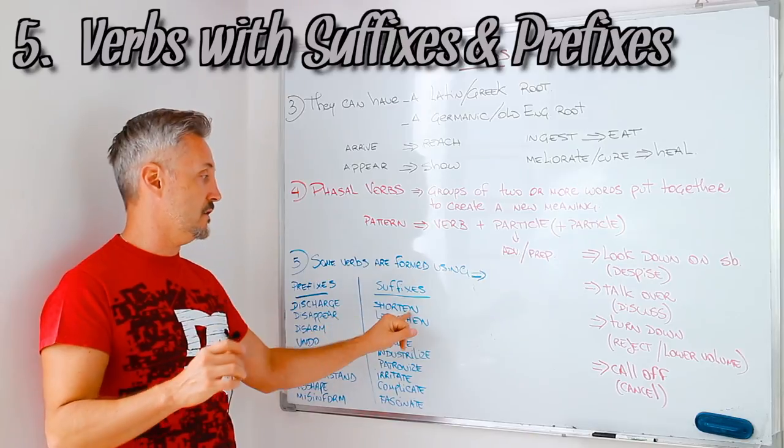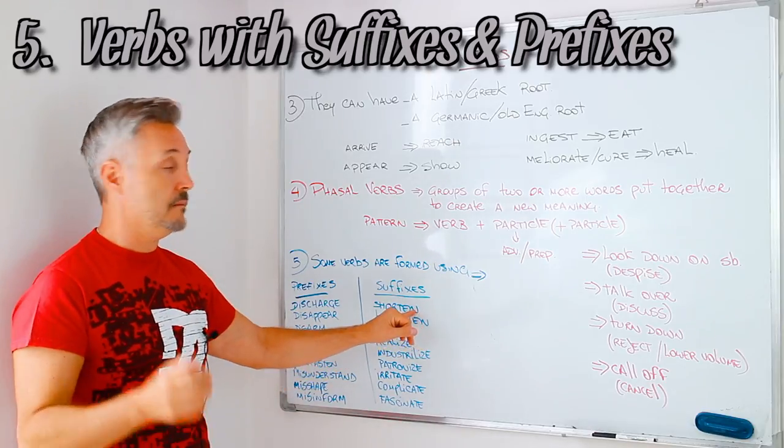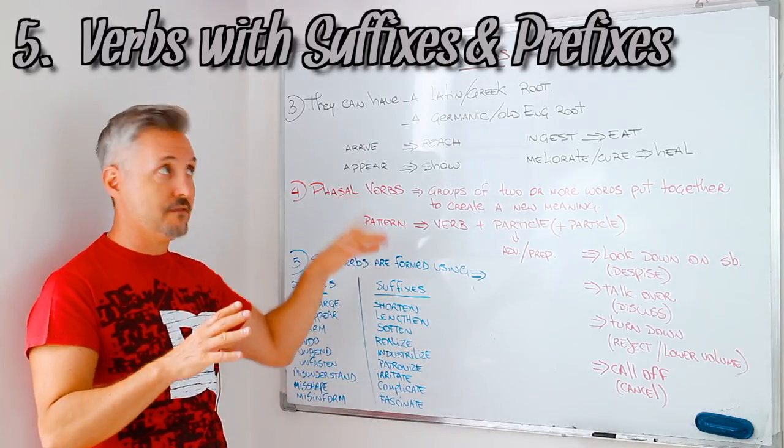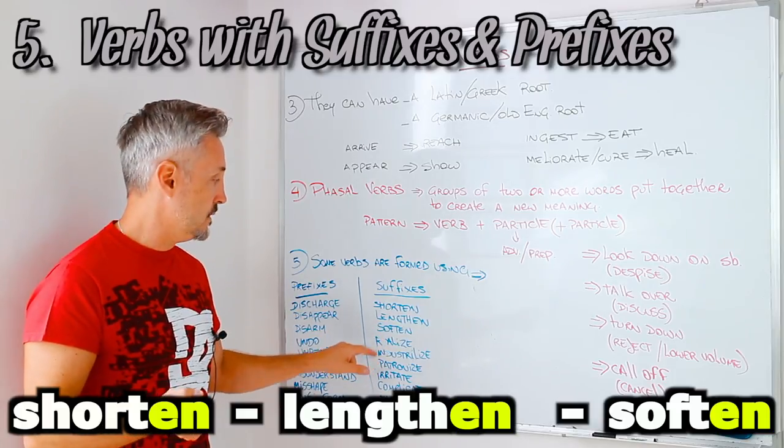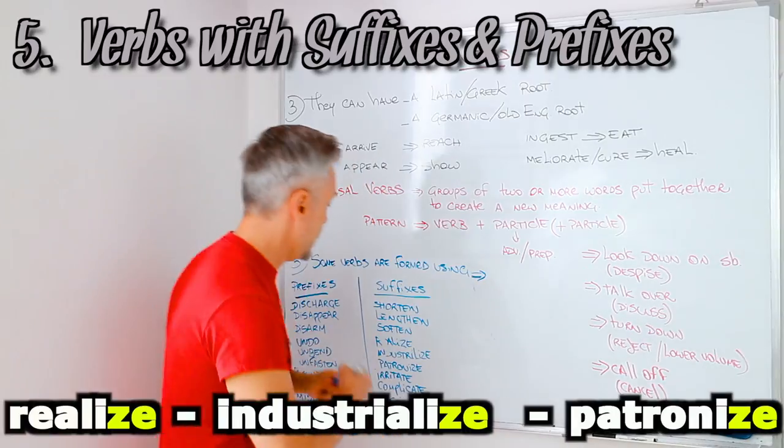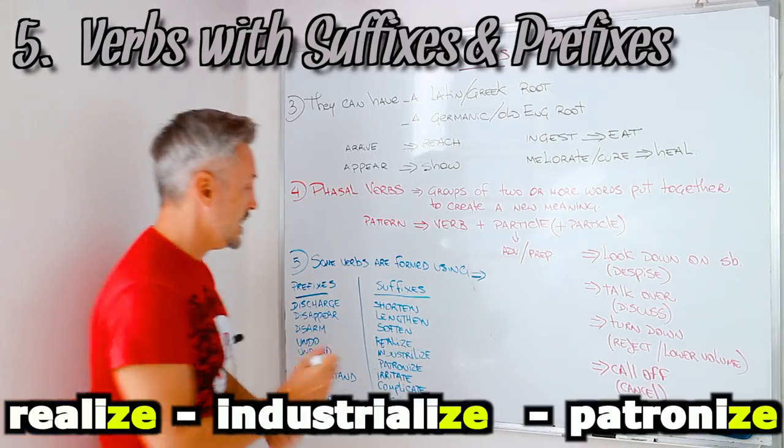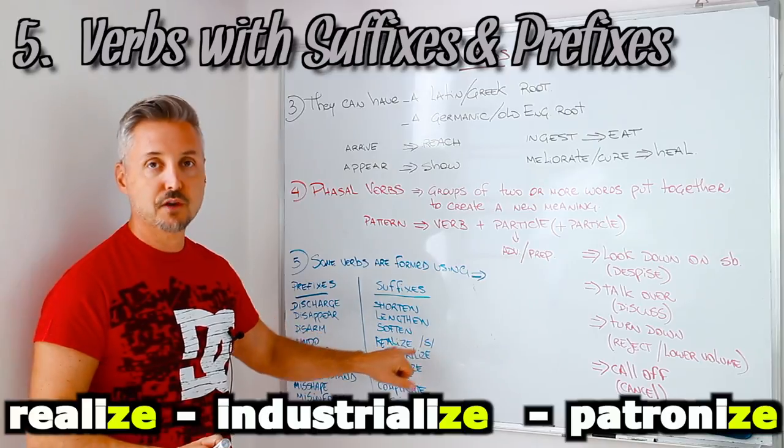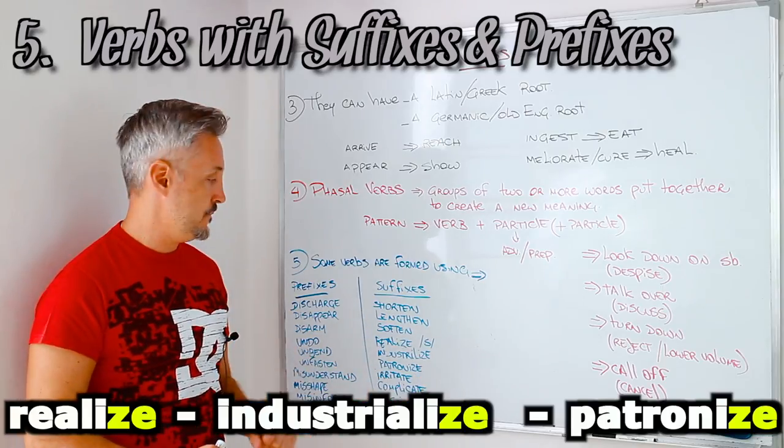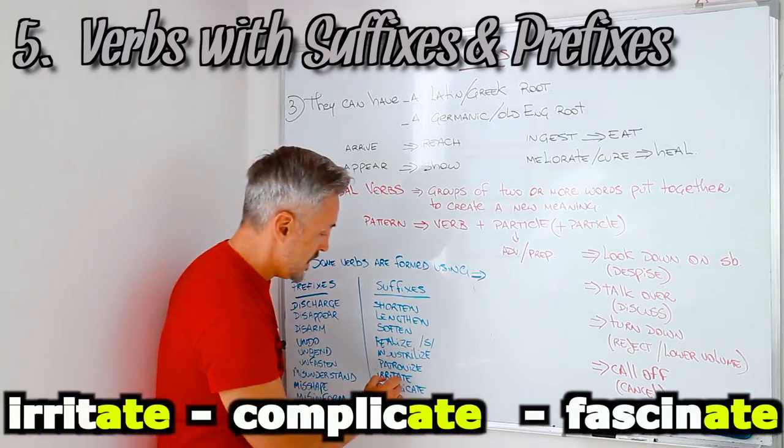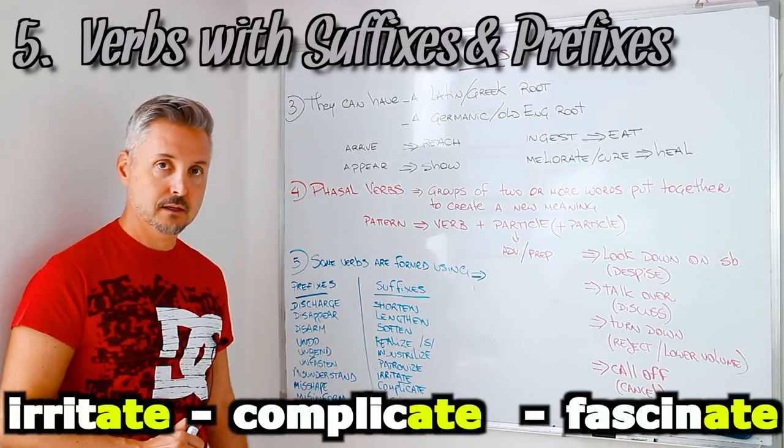Then, with suffixes. Suffixes are the ones that are at the end. There are two letters or three letters that are put at the end of the words. But if you want to watch a lesson on this, you have the lesson and you may click it here. Now, shorten. Now, shorten. Lengthen. Lengthen. Soften. Then, we have realize with ize. So, I wrote it in American English, but you can even write it with an S in British English. Realize. Realize. Industrialize. Industrialize. Industrialize. Then, we have with ate. Ate. So, irritate. Complicate. Fascinate.